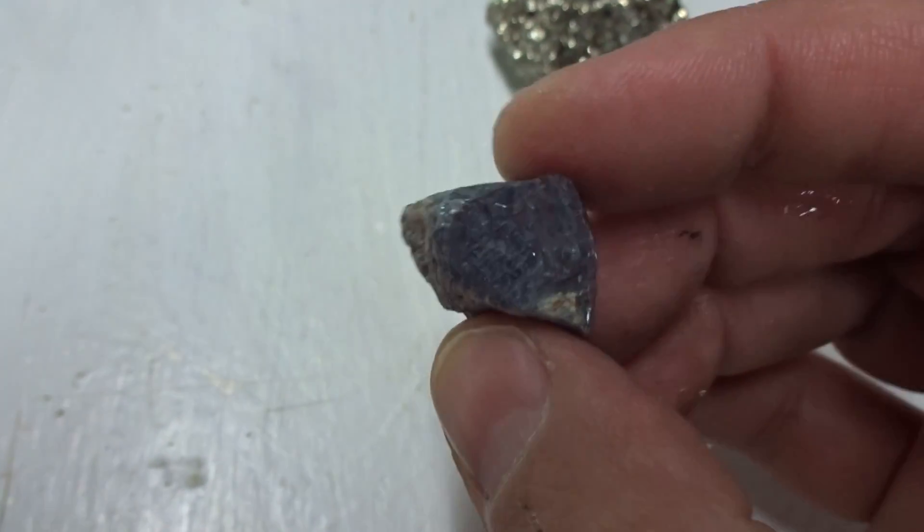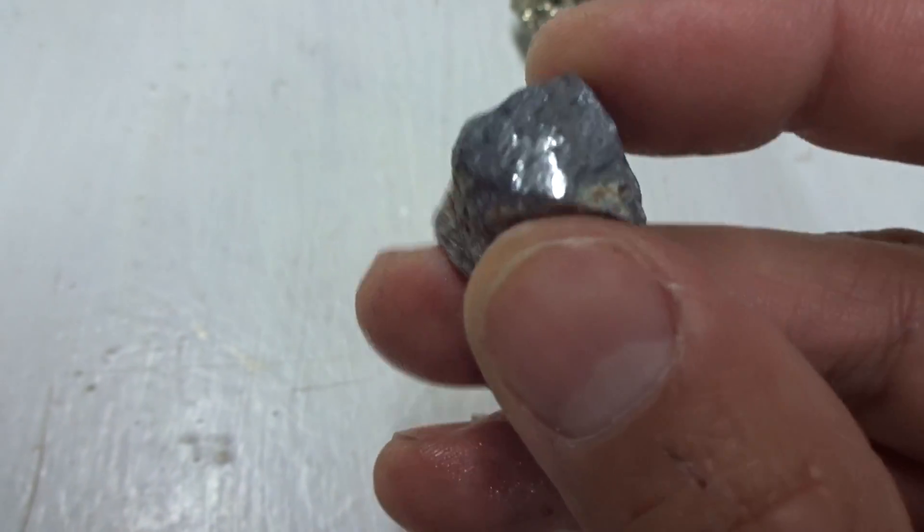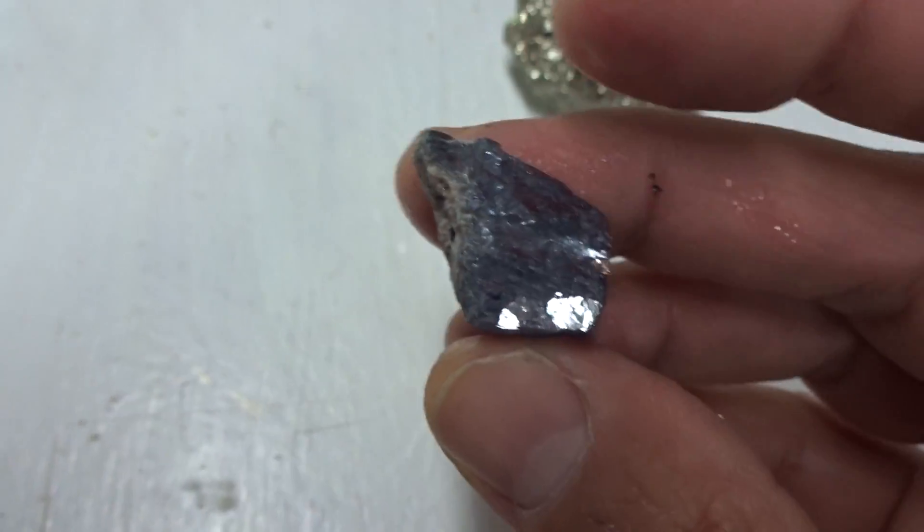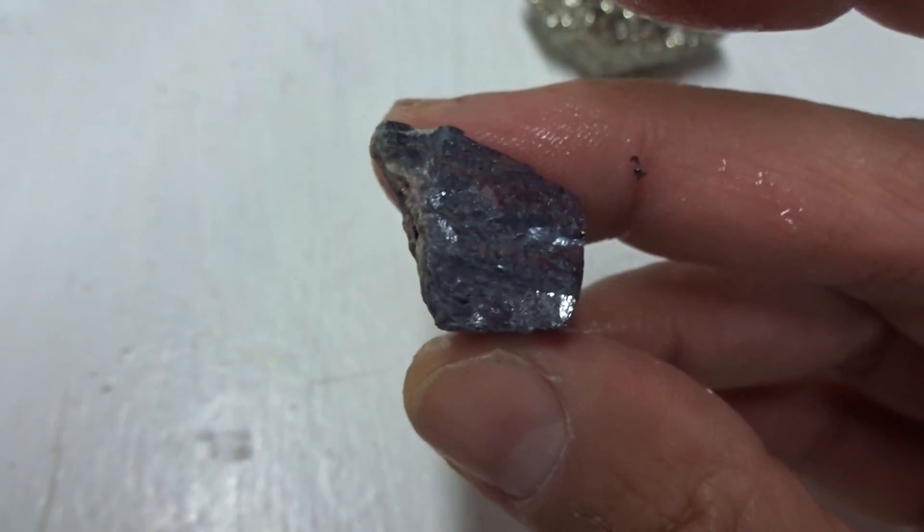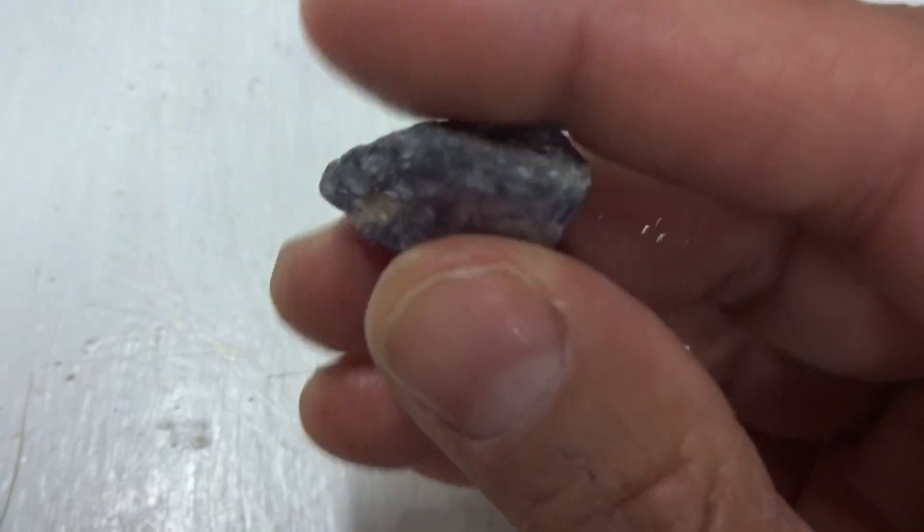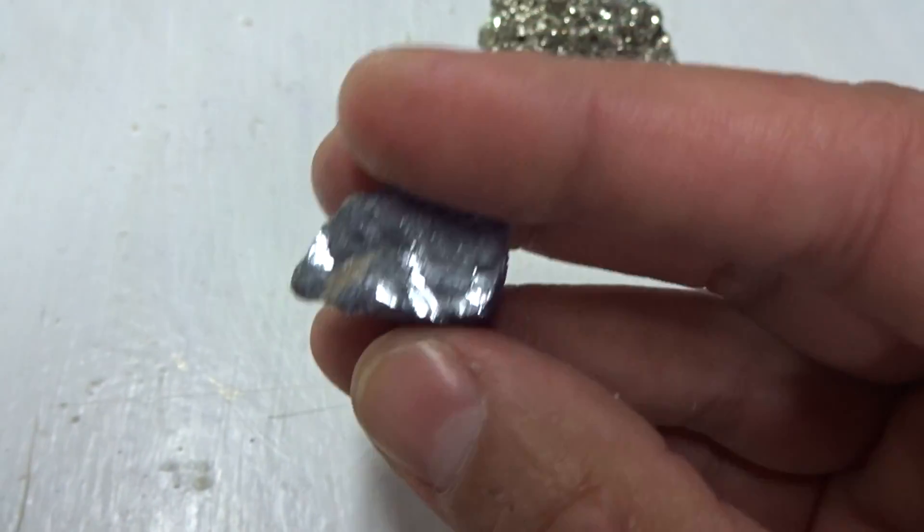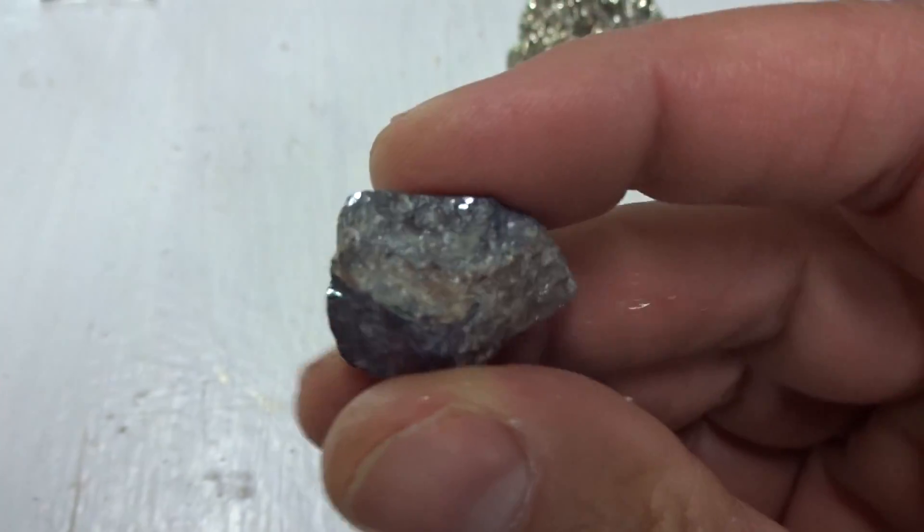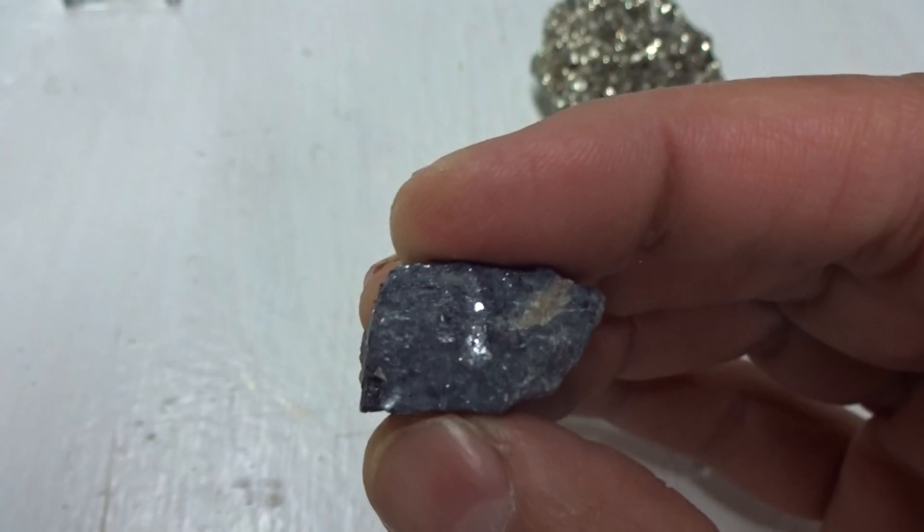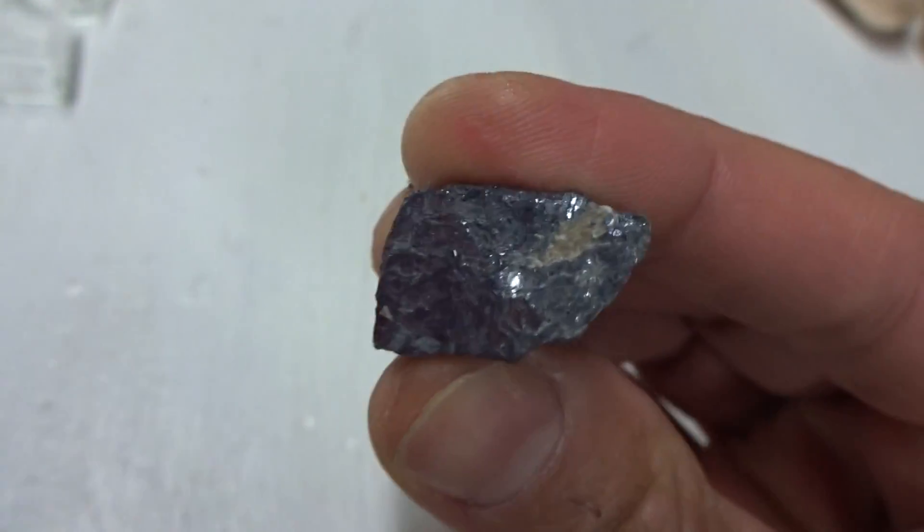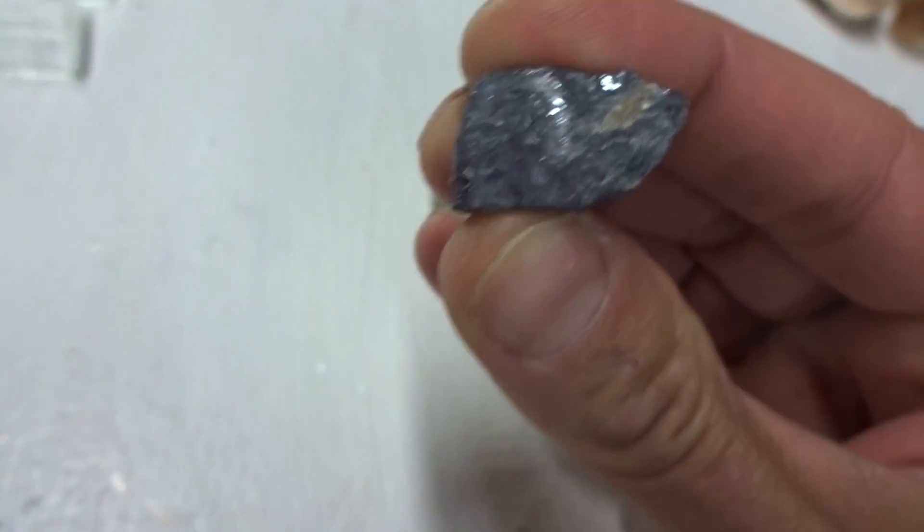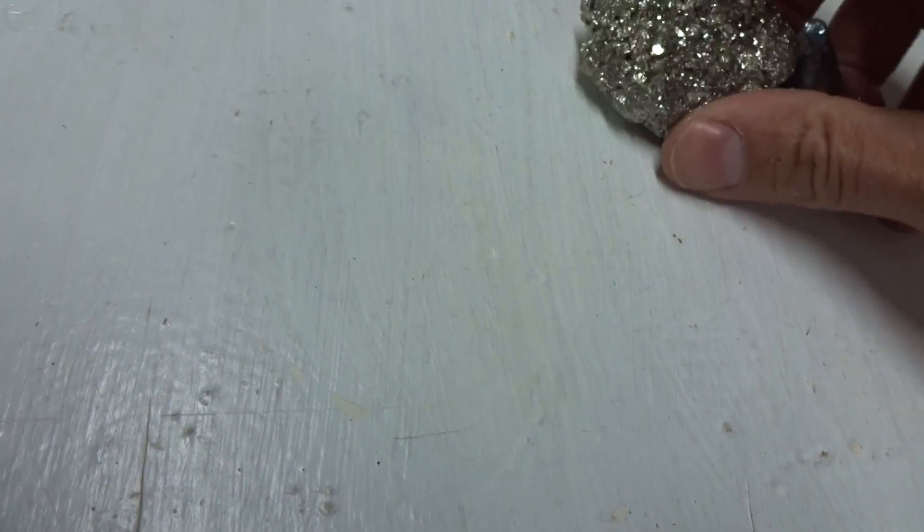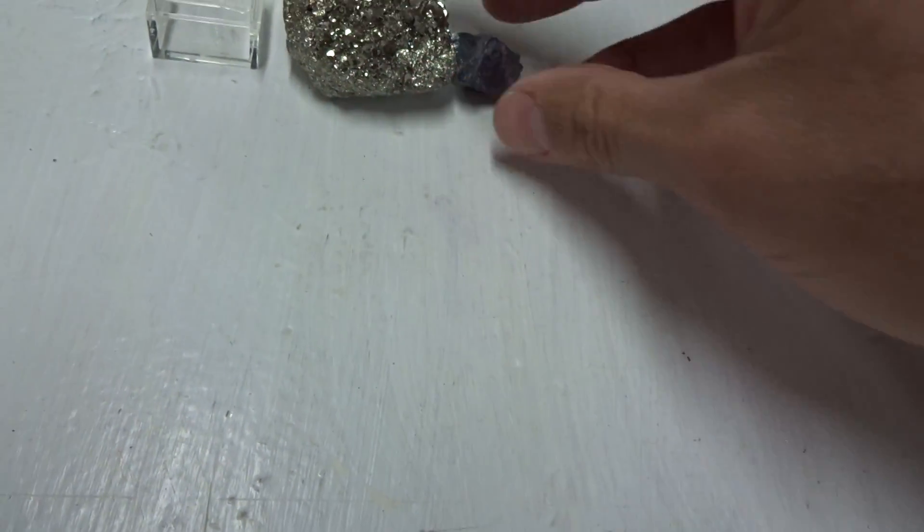Galena has a metallic luster to it. And it is often, as you can see here, cuboidal. But it has cleavage.